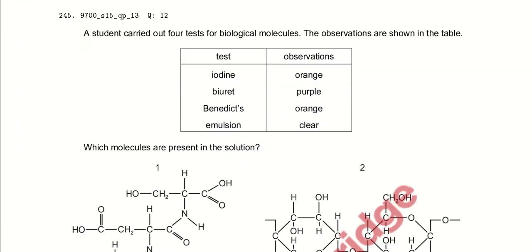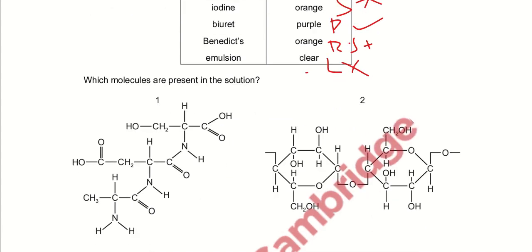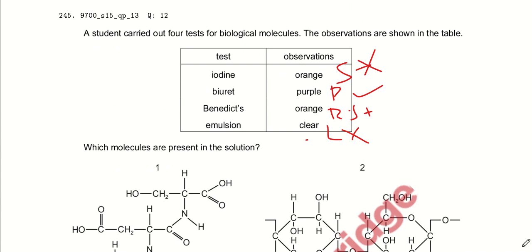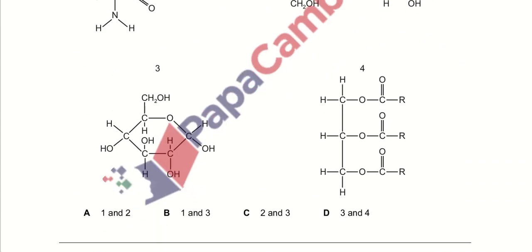A student carried out four tests for biological molecules. The observations are shown in the table. The iodine test gives orange color — no starch is present. The biuret test gives purple color — some kind of protein can be present. The Benedict's solution gives orange color — reducing sugars are present in a very low amount. The emulsion test is clear — lipids are not present, they are absent. So, which molecules are present? It can be proteins and reducing sugars. Looking at the four structures given, option B is the right answer, corresponding to a reducing sugar and a protein.